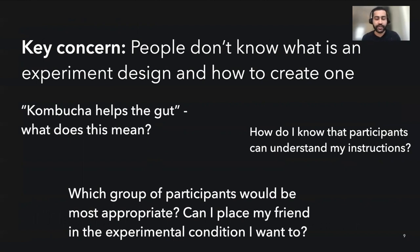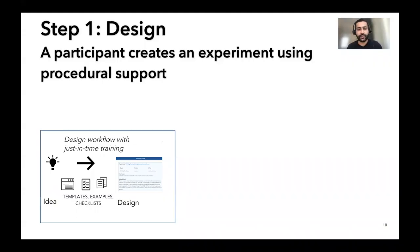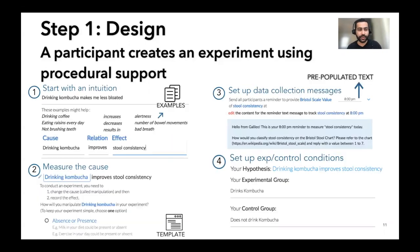Take, for example, this idea that kombucha helps the gut. People need to operationalize this to a hypothesis before continuing on with the next steps of experiment design. Step one in Galileo is the design workflow that supports people in creating an experiment design by providing procedural support — such as examples, templates, pre-populated texts, and other details that help people convert their ideas to specific concrete artifacts.